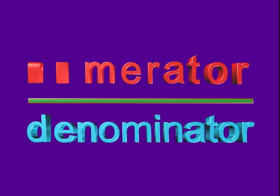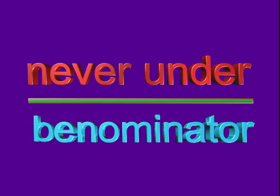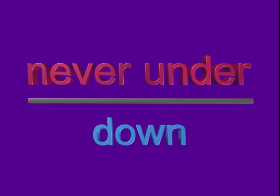Numerator starts with N, U for never under, N-U for never under — they're always on the top. Denominator starts with D — down, D for denominator, D for down. Denominators are always on the bottom.